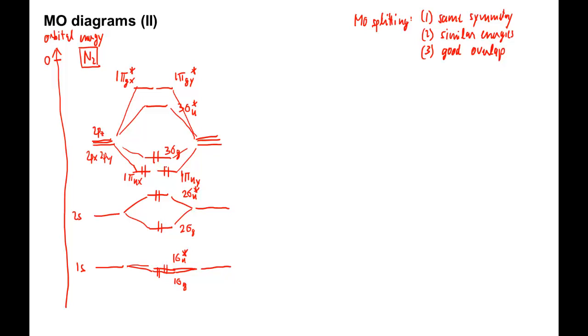We see that all electrons are paired and the overall spin, s, is zero. We have a singlet. The 3σg is the highest occupied MO or HOMO, and the 3σu star is the lowest unoccupied MO or LUMO.